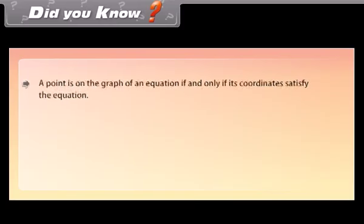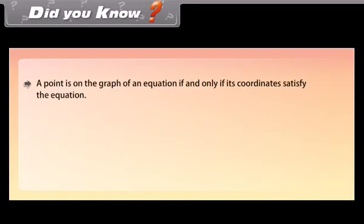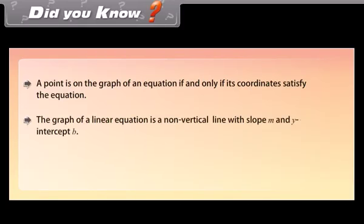Did you know? A point is on the graph of an equation if and only if its coordinates satisfy the equation. The graph of a linear equation is a non-vertical line with slope m and y-intercept b.